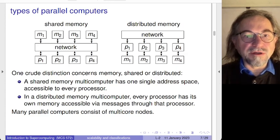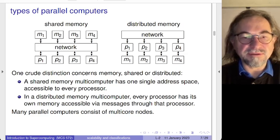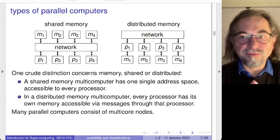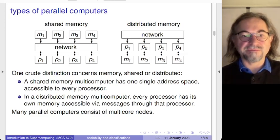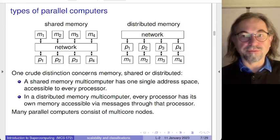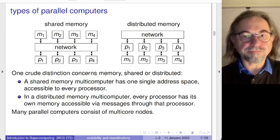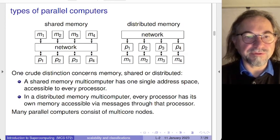There is also the hybrid: a supercomputer consists of several nodes, and every node is actually a shared memory parallel computer with one or multiple GPUs attached. So while the pure binary classification exists, in reality everything is typically a blend of the different types.